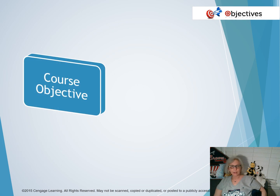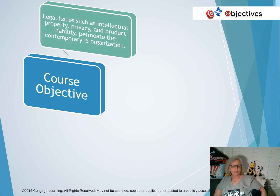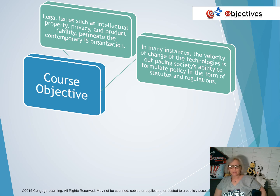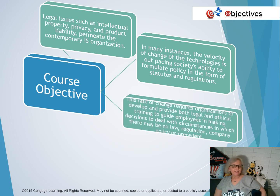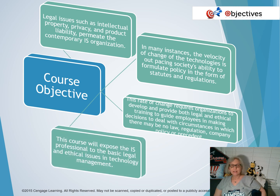The course objective is: legal issues such as intellectual property, privacy, and product liability permeate the contemporary IS organization. In many instances, the velocity of change of technologies is outpacing society's ability to formulate policy in the form of statutes and regulations. This rate of change requires organizations to develop and provide both legal and ethical guidance to help employees make decisions in circumstances where there may be no law, regulation, company policy, or precedent. This course will expose the IS professional to the basic legal and ethical issues in technology management.